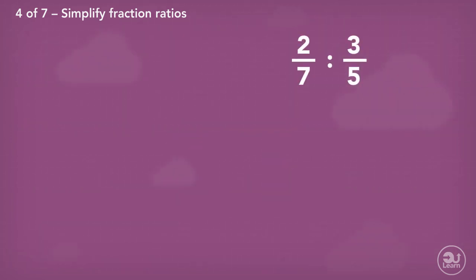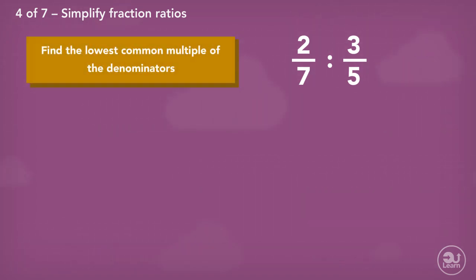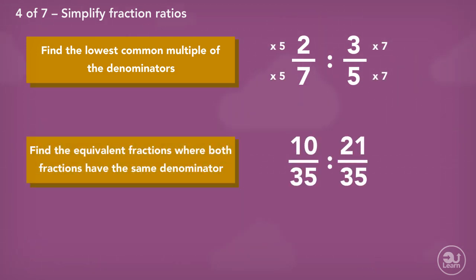How about this type of question? Simplify 2 out of 7 to 3 out of 5. The same process as before. We find the lowest common multiple of the denominators. In this case, it's 35. We find the equivalent fractions where 35 is the denominator for the two fractions. Now that the denominators are the same, the final answer will be 10 to 21.